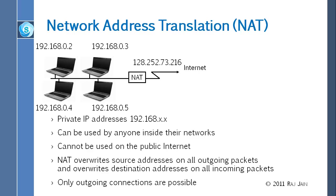Port forwarding means no other computer in your network can use that forwarded port — all requests on that port go to the one registered node. Incoming connections are therefore possible only in two ways: either you permanently register a port via port forwarding, or you register on demand by first sending an outgoing request, which automatically adds your address and port to the NAT table.